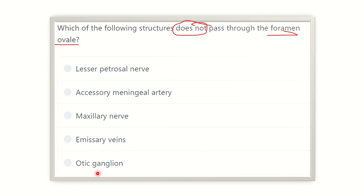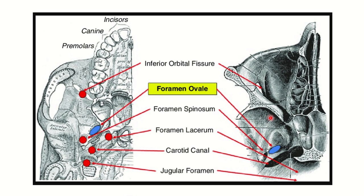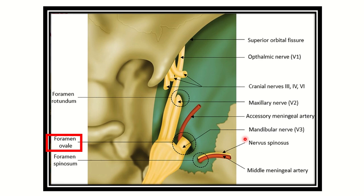Here we can see the foramen ovale — this is it here. This is the sphenoid bone, and this is an inferior view of the base of the skull. We can see the foramen ovale lies in the sphenoid bone.